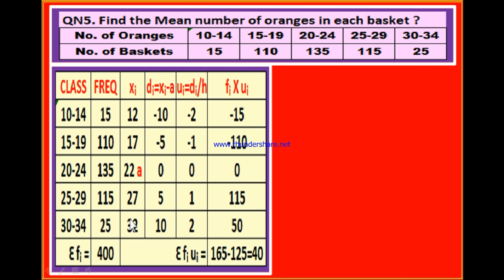After writing the mid-values, you may consider the mid-value opposite to the highest frequency, or the mid-value of the middle class, as 'a'. Out of 5 classes the 3rd class is the middle class, so we take its mid-value 22 as 'a'. This 'a' stands for assumed mean. After the mid-value column, the next column is for deviation. The formula is: di = xi minus a, where xi is the mid-value and a is the assumed mean. You subtract the assumed mean from the mid-value for each class.